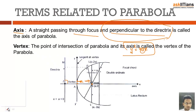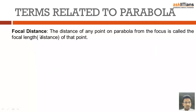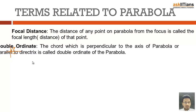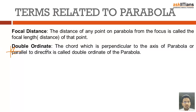The next term is the vertex — the point of intersection of the conic with the axis. In the figure, point A is the vertex. Next is the focal distance: for any point on the parabola, the distance from the focus to that point is known as the focal distance.